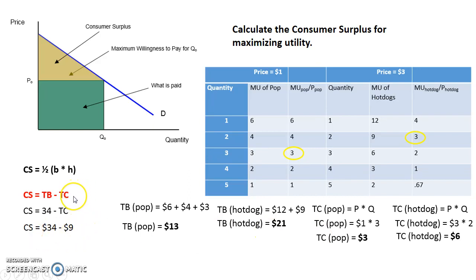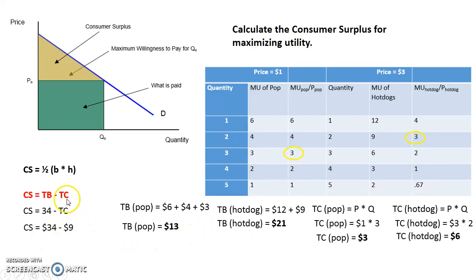Consumer surplus equals total benefit minus total cost. We calculated a total benefit of 34, minus the total cost of 9. So the consumer surplus when maximizing utility for the hot dogs and pop is 25.